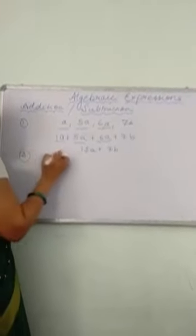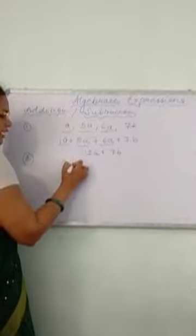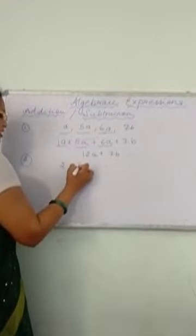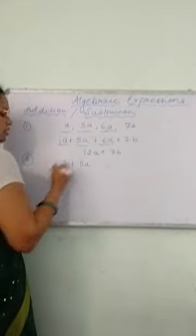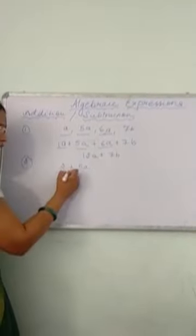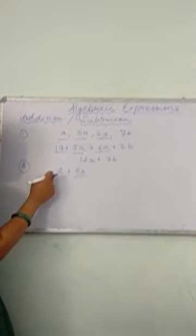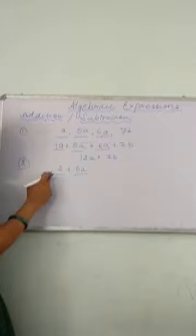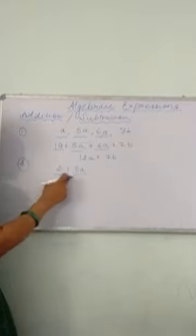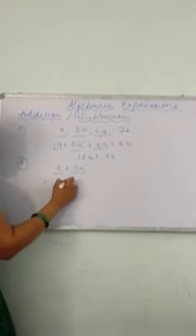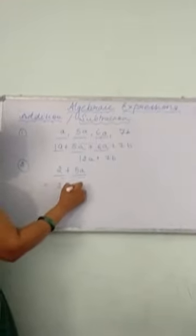Similarly, if I have 2 plus 5A, what will be the answer? Because both are unlike terms — this is 5A and it is only 2. So these are unlike terms, so the answer will again be 2 plus 5A.